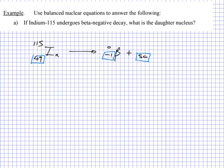Looking up atomic number 50 on the periodic table gives us Sn — tin. By conservation of nucleons, 115 = 0 + 115, so the daughter is Tin-115. Indium-115 decays to Tin-115 plus a beta negative particle.